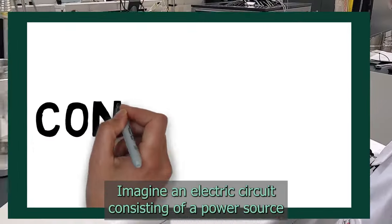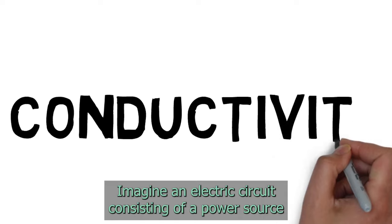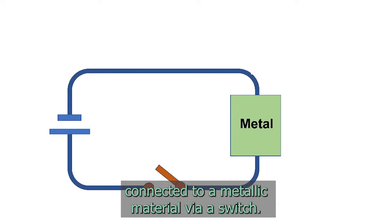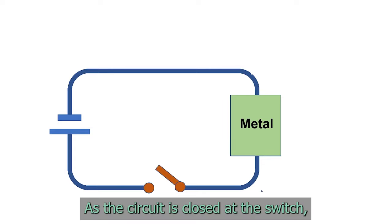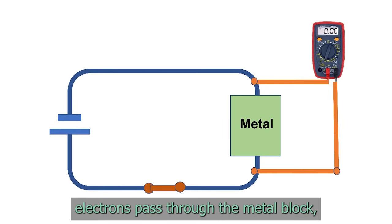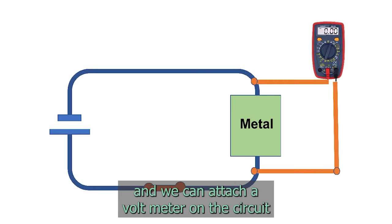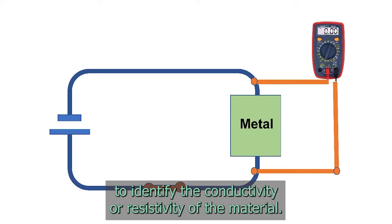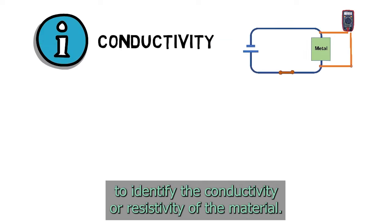Imagine an electric circuit consisting of a power source connected to a metallic material via a switch. As the circuit is closed at the switch, electrons pass through the metal block.